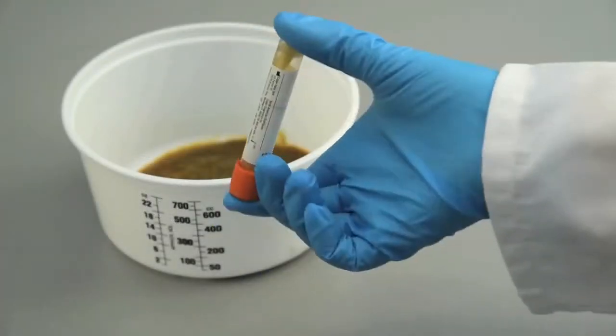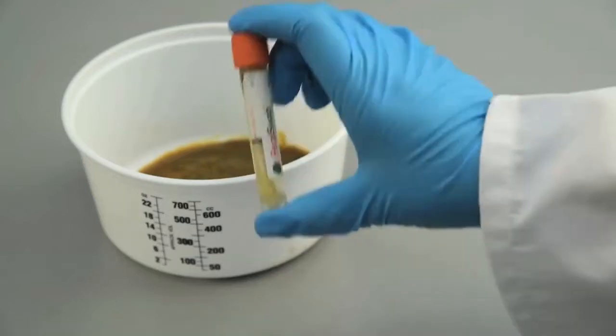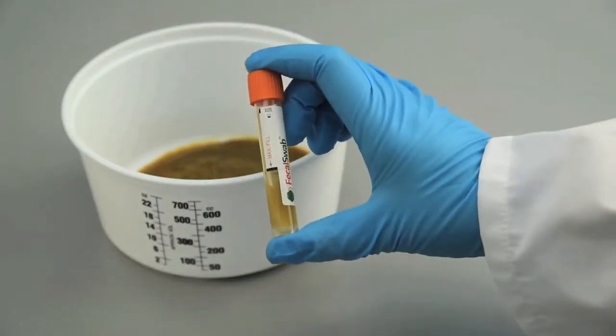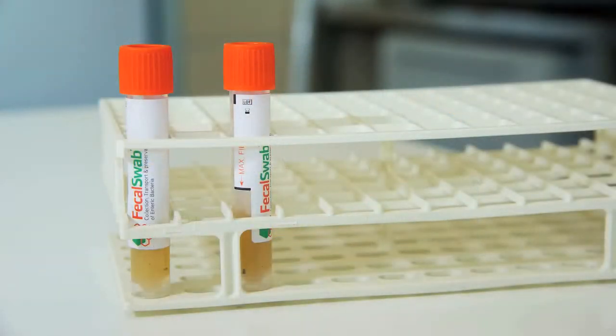Shake the vial until the sample appears homogeneous. Write patient's name and demographics on the tube or apply a label and send the sample to the laboratory.